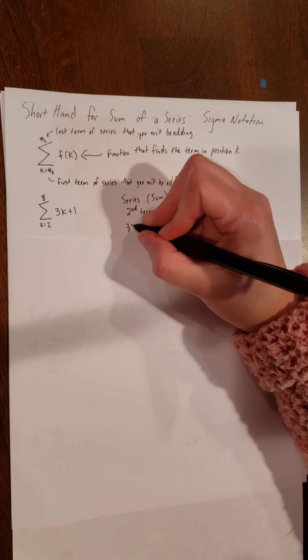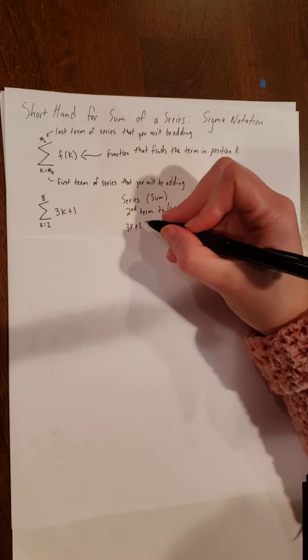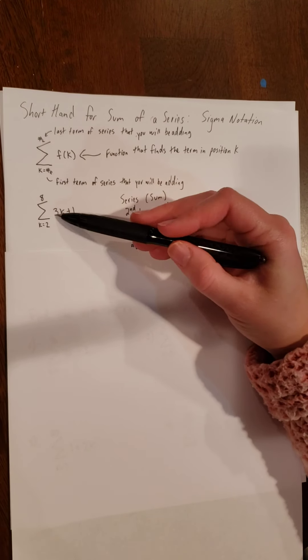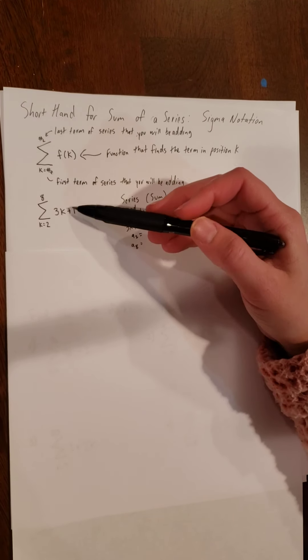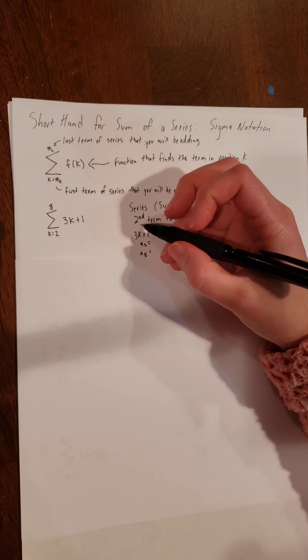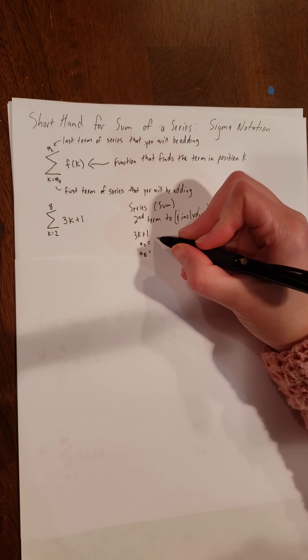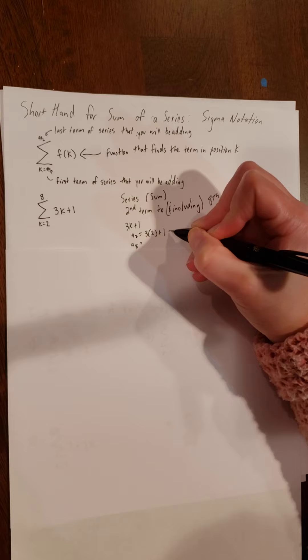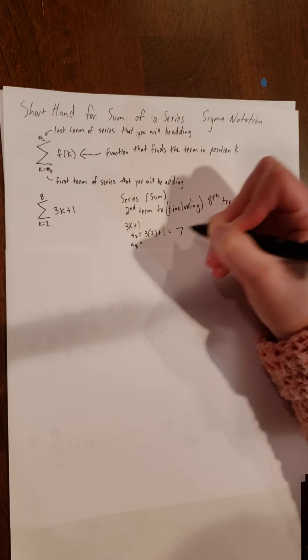The expression 3k + 1 is how you find the second term and the eighth term — it's the formula that gives you the term in the sequence. To get the second term, you do 3 times 2 plus 1, which gives you 7. To get the eighth term, you do 3 times 8 plus 1.